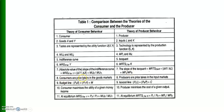Consumers are price takers in the product markets, while producers are price takers in the factors market. In consumer behavior, the budget line equation is given by M = Px·Qx + Py·Qy.